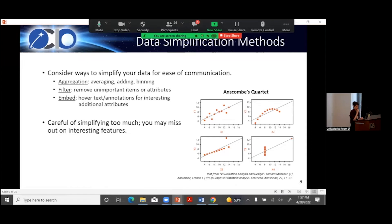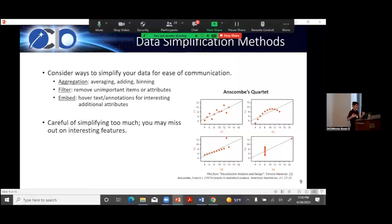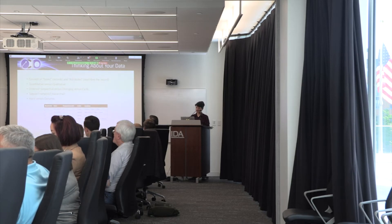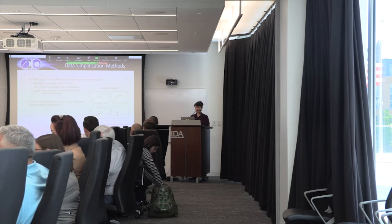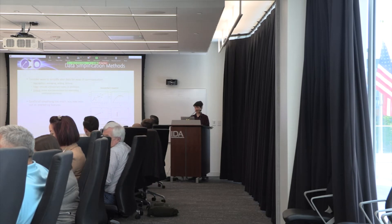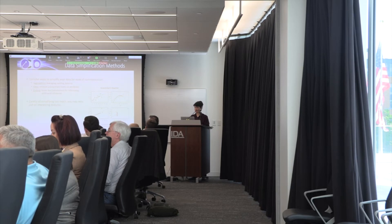Now, data simplification methods. Unless you've got the simplest data set, you're probably doing some kind of analysis to crunch it down. The easiest one is aggregation — you've got a lot of marks and you're simplifying them: taking the average, adding them together, binning them, reducing the number of marks. You could also filter out uninteresting data — maybe you only care about one year, no reason to show all 24 years. Or filter out attributes you don't care about, like a record ID that isn't telling anybody anything.